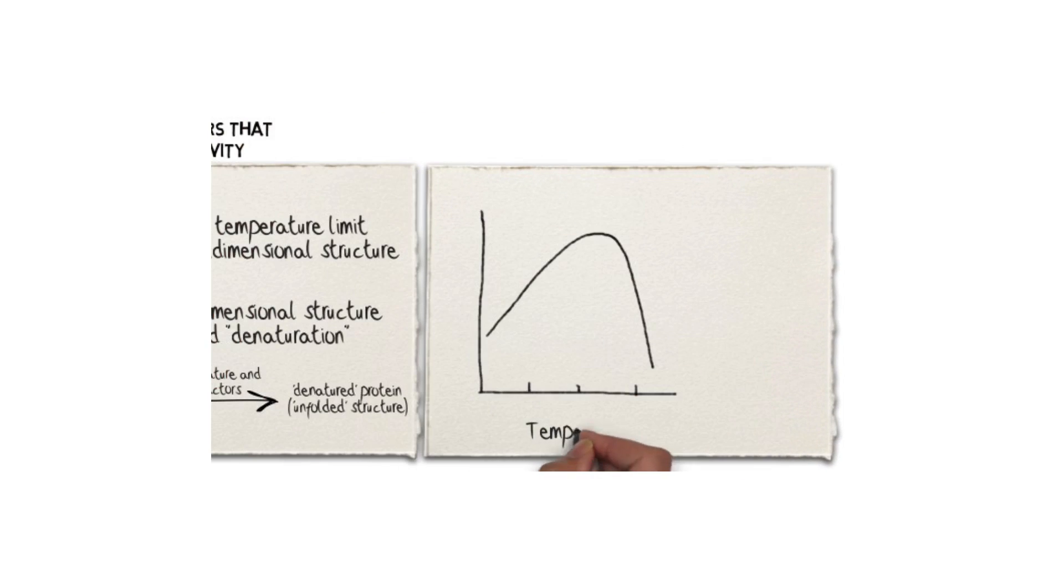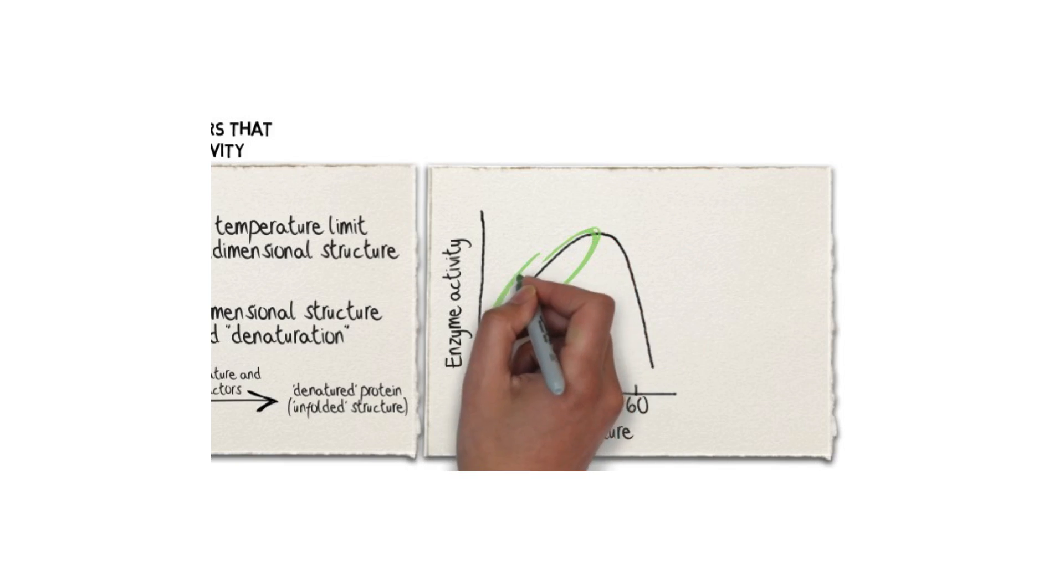Temperature can affect enzymes in two ways. This graph shows you that when temperature increases gradually, an enzyme can actually work better. In other words, the enzymatic activity can improve as temperature increases.